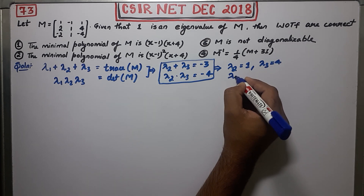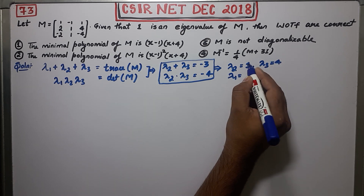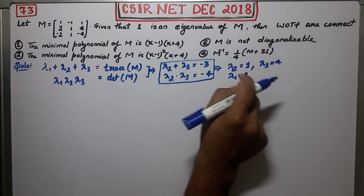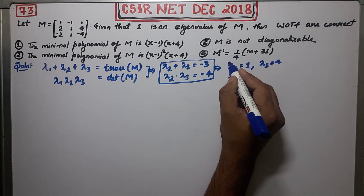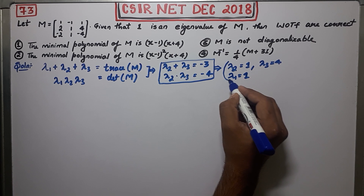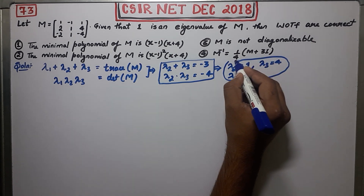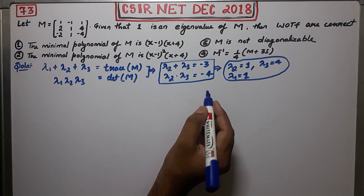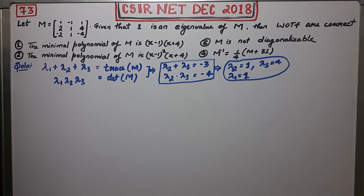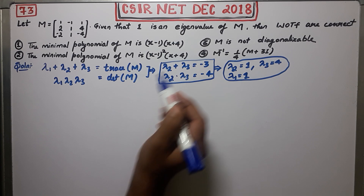So you have two repeated eigenvalues: 1 is repeated (given and found again), and minus 4. These are your eigenvalues. Now, in the question you have to find the minimal polynomial. Before going to the minimal polynomial, I will first suggest trying option three.